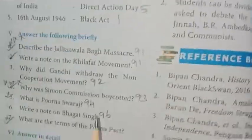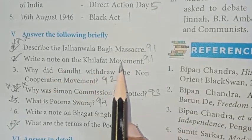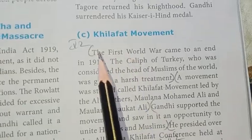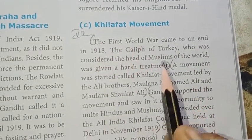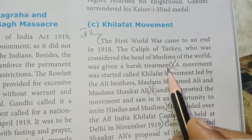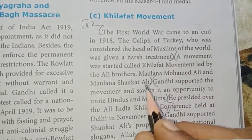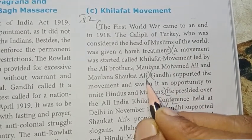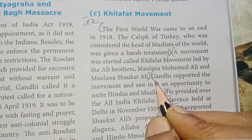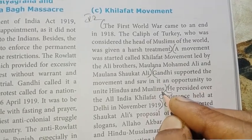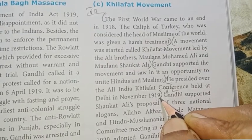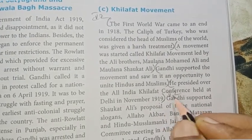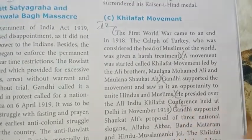Second question: Write a note on the Khilafat Movement — page 91. First point: The First World War came to an end — harsh treatment. Second point: The movement led by Maulana Shaukat Ali. Third point: Gandhi supported Muslims. Fourth point: He presided in 1919. Four points total.